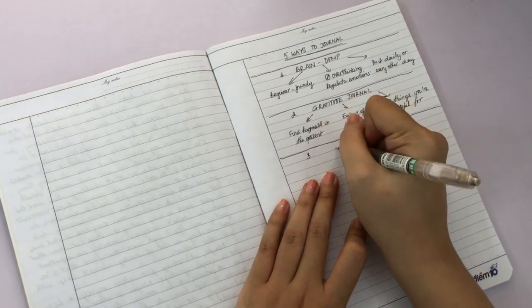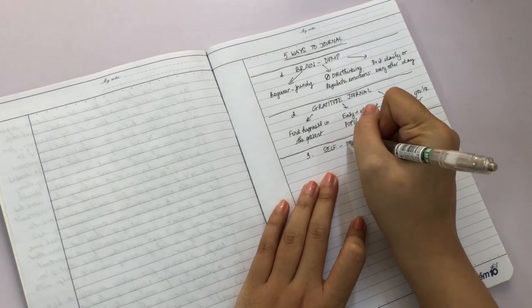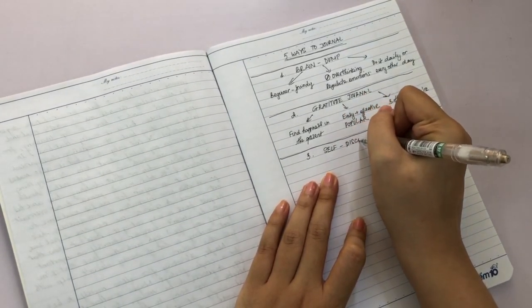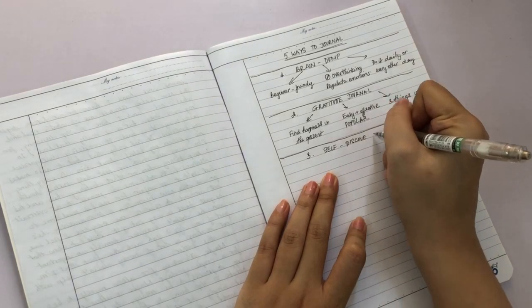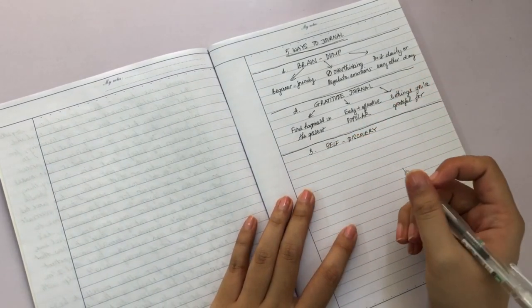We're moving on to the third kind of journal, which is my favorite kind of journal lately. It is the self-discovery journaling. I often do this when I'm in a good or in a stable mood.